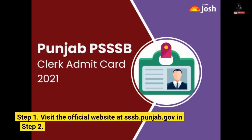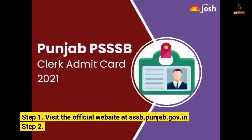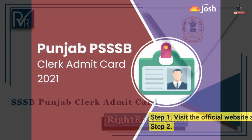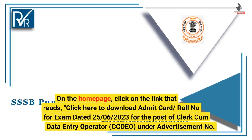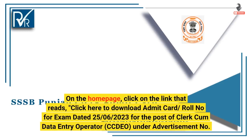Step 1: Visit the official website at SSSB Punjab Gov-In. Step 2: On the home page, click on the link that reads 'Click here to download Admit Card / Roll No for exam dated 25th June 2023 for the post of Clerk-Cum Data Entry Operator (CCDU), under Advertisement No. March 2022.'